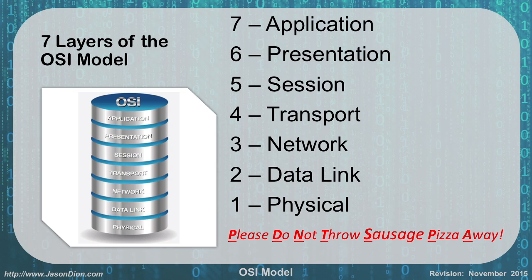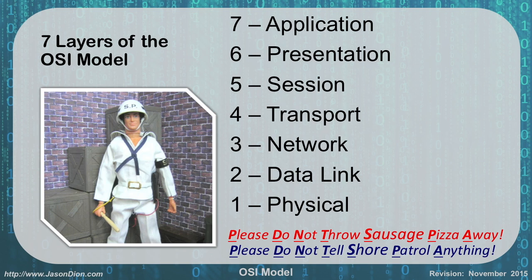The way we like to remember this is the mnemonic: 'Please Do Not Throw Sausage Pizza Away.' For students who don't have the OSI model memorized yet, on test day write down layers 1 through 7 using PDNTSPA to help you remember where you are. Because if you don't remember the 7 layers, you'll get yourself screwed up on test day. Being a military guy, I remember it as 'Please Do Not Tell Shore Patrol Anything.' There are lots of other mnemonics out there — those are just the two I use.